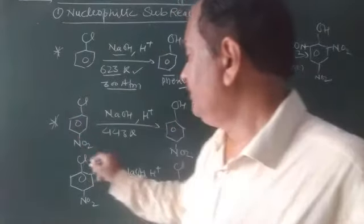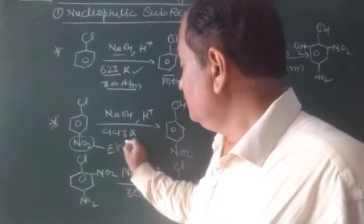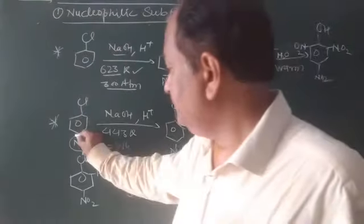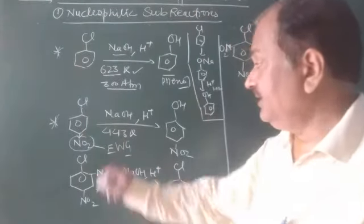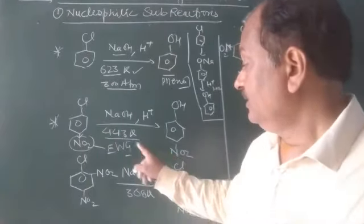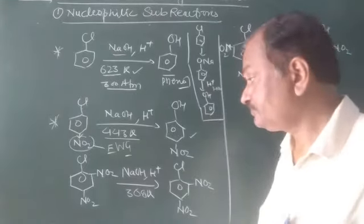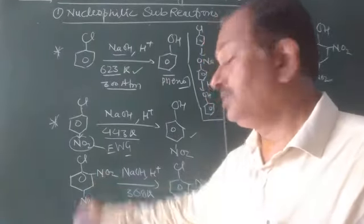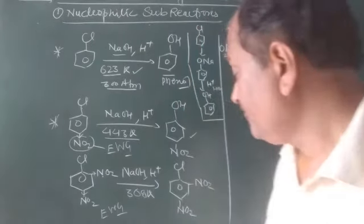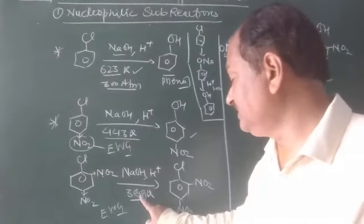When one electron-withdrawing NO2 group is present, the temperature required is 443 K. When two electron-withdrawing NO2 groups are present at ortho and para positions, the temperature is reduced further to 368 K, making the substitution much easier.